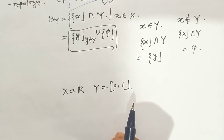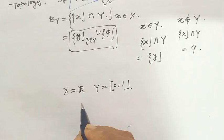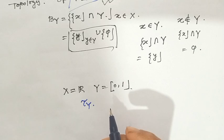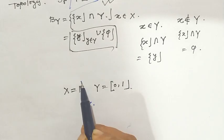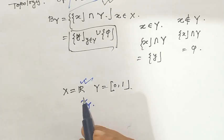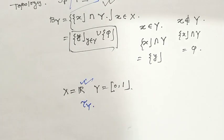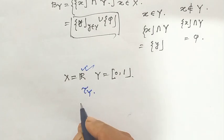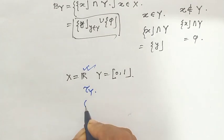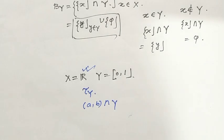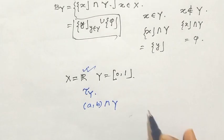Here X has the standard topology, so the basis consists of open intervals. For Y = [0, 1], the basis B_Y consists of intersections of open intervals with [0, 1]. Depending on the interval (A, B) intersected with [0, 1], the result may be: an open interval (A, B) when 0 < A < B < 1; a half-open interval [0, A) when A is less than 1; a half-open interval (A, 1] when A is greater than 0; or the closed interval [0, 1] itself.